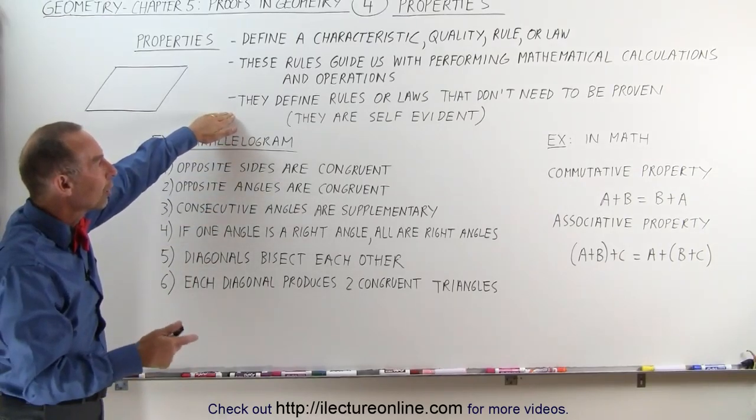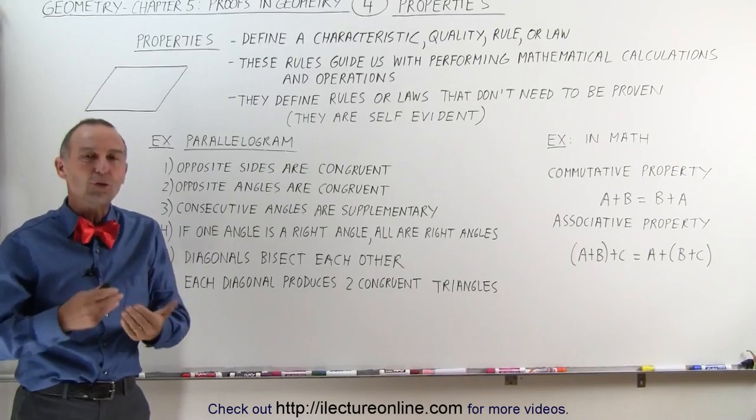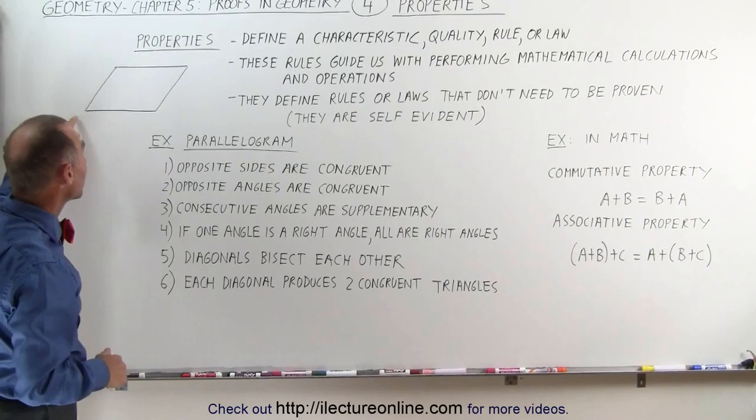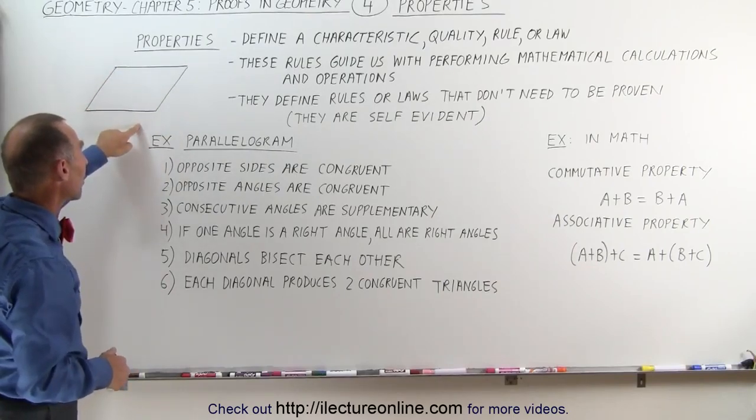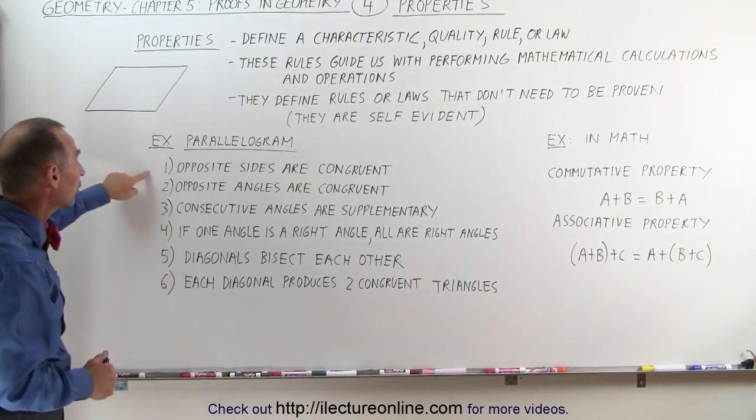They define rules or laws that don't need to be proven. Again, they're self-evident. No proof required. We just accept them for what they are. As an example, here's a picture of a parallelogram. What do we know? What are the properties of parallelograms?